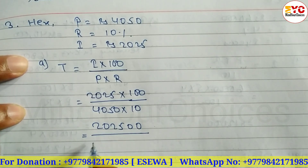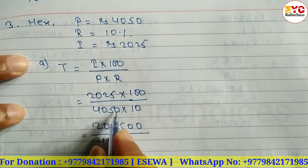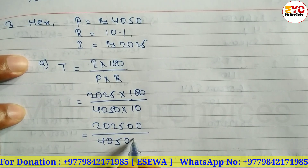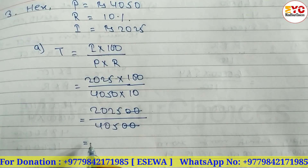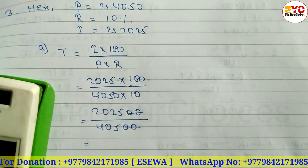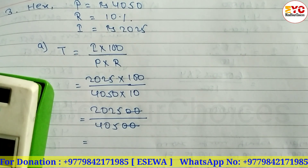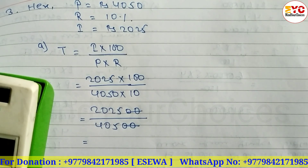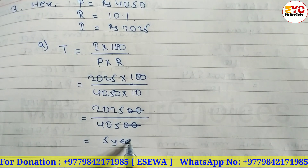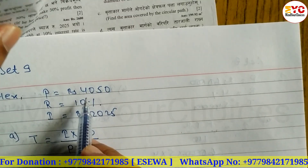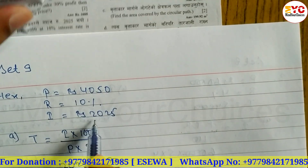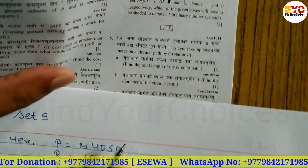So we get 202500 divided by 40500. Simplifying, 2025 divided by 405, we get 5. So time is equal to 5 years. Within 5 years, the interest on 4050 is rupees 2025.